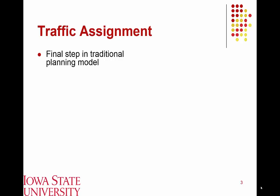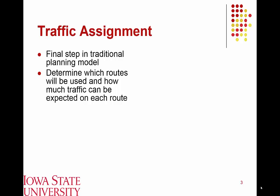Traffic assignment is the final step in our four-step planning model. Up to this point, we've gone through trip generation — we know how many trips are starting and ending in each of our traffic analysis zones. We've then distributed those trips so we know how many trips are going from point A to point B between each of the travel analysis zones. We've then split these trips by mode, so we know what percent will use transit versus personal automobile. Our last step is to determine what routes are going to be utilized between these zones and how much traffic can be expected on each of those routes.